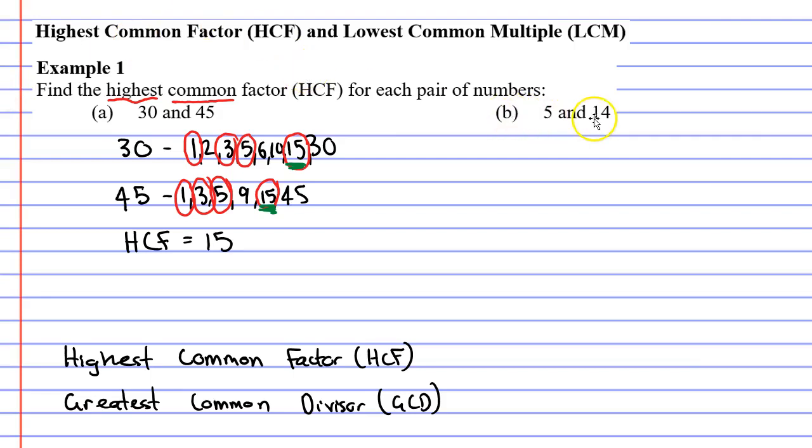Now let's move on to question B. Same thing again, what are the factors of 5 and what are the factors of 14? Now 5 is a prime number so the factors are only 1 and 5 and the factors of 14 are 1 and 14 and 2 times 7 makes 14 as well. So what factors do we have in common here? There's only one factor they have in common and that's the 1. Sometimes the highest common factor is only going to be 1.